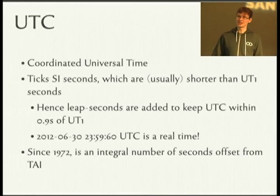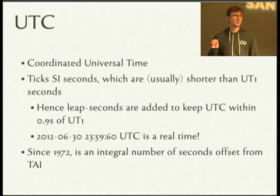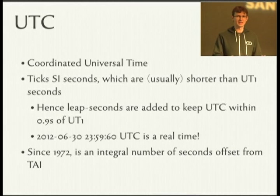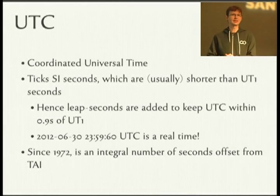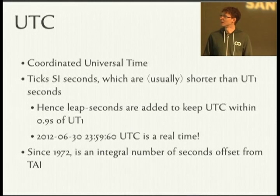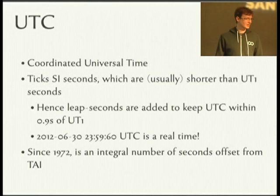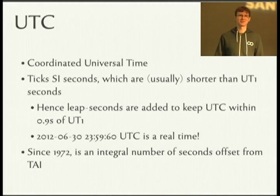Which brings us to UTC, which ticks these SI seconds, so each second is a very reliable length of time. But it would drift with TAI, except that we insert leap seconds so that UTC noon the sun is, plus or minus 0.9 seconds, directly overhead. Because of leap seconds, we can get times like 11:59 p.m. and 60 seconds — it's actually a timestamp that can exist, and that is one that will exist.